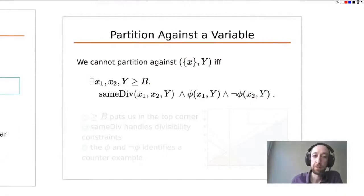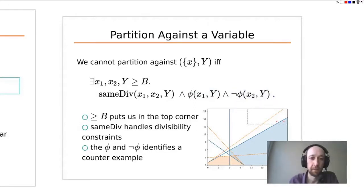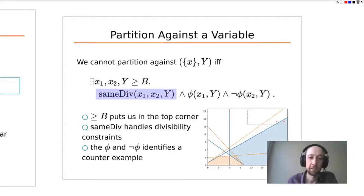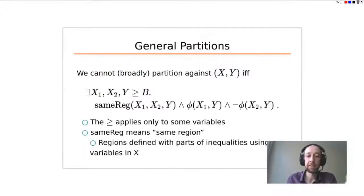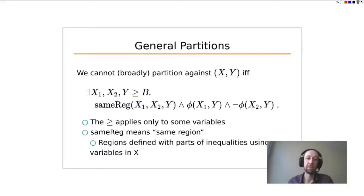Using that intuition, we have a simple test for decomposability: look for two points — two values of x with a fixed value for y — in the top unbounded corner such that one is accepted and one is not. If we find such a pair, we have a witness for non-decomposability. There's also a 'same div' term to handle divisibility constraints. To generalize this to partition decomposition, the formula is essentially the same, except the divisibility part becomes 'same region', and the region encompasses linear inequalities that use some but not all variables.